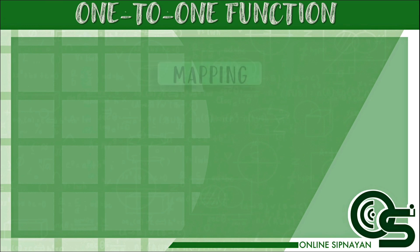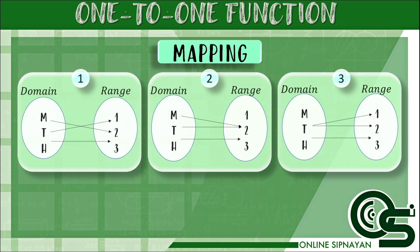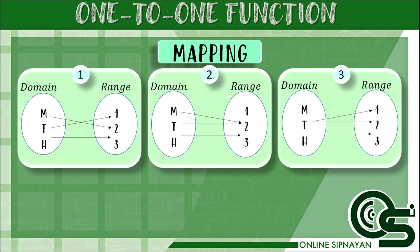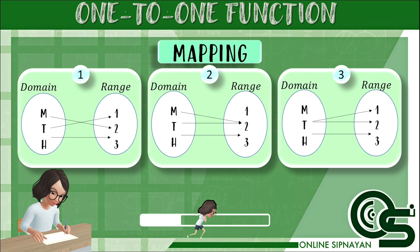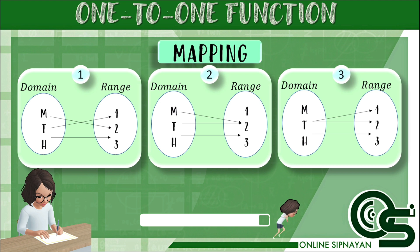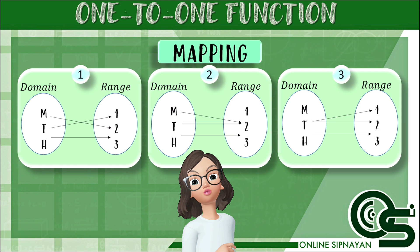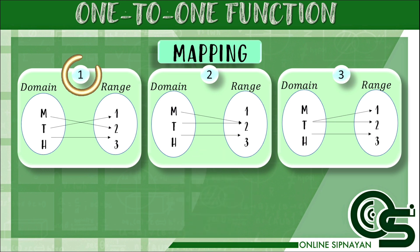Let's start. Which of the following is a one-to-one function? For number 1, since it is a function, we can now determine if it is a one-to-one function or not. Since the domain corresponds to only one range, it means that this is a one-to-one function.